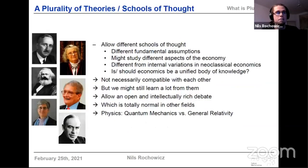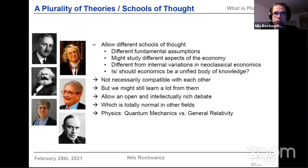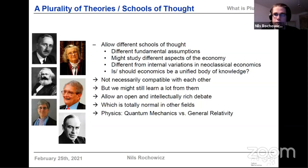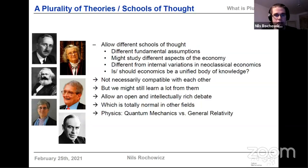The second line of pluralism is a pluralism of theories and schools of thought. By a school of thought, I mean something that makes fundamentally different assumptions about the economy — not just different varieties of neoclassical economics, but another school that is actually different at its core. Since these fundamental assumptions are different about what the economy is and how we can legitimately study it, these different schools of thought are not necessarily compatible with each other and cannot easily be combined into a unified body of knowledge. But we might still learn a lot from contrasting and comparing them, allowing an open and intellectually rich debate between them.